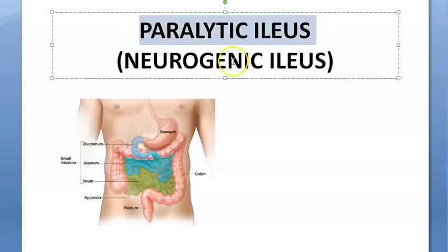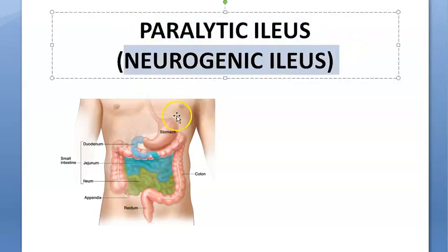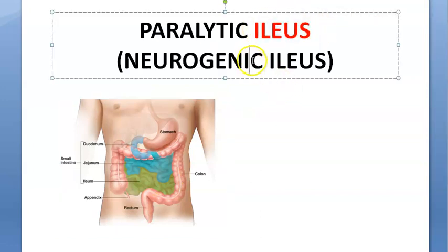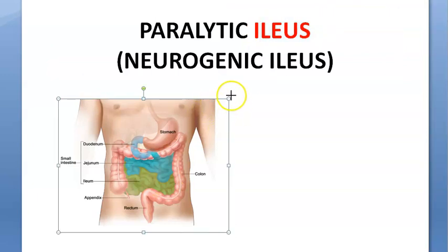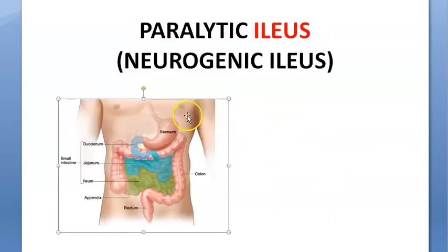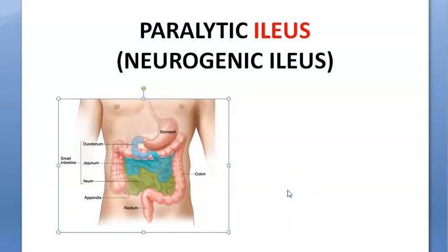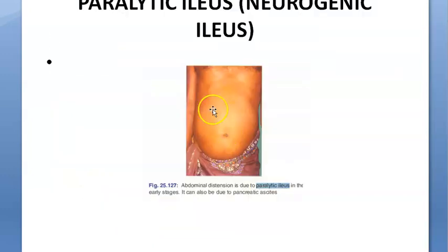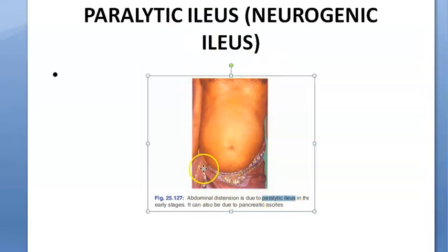In this video, let us look at paralytic ileus or neurogenic ileus, also simply called ileus. The ileum is part of the small intestine. Instead of sending food forward for absorption into the large intestine, it has paralyzed and is not performing peristaltic activity. There is some problem with the nerve, which is why it is called paralytic or neurogenic ileus.